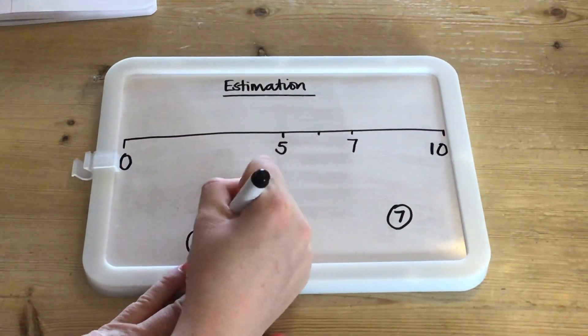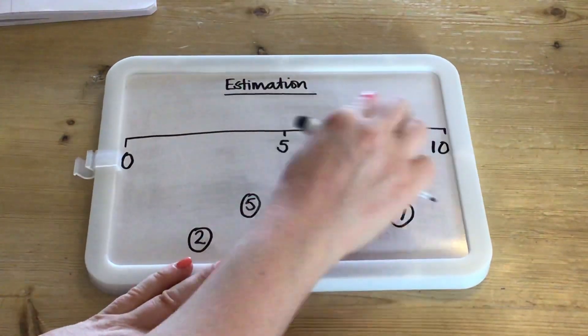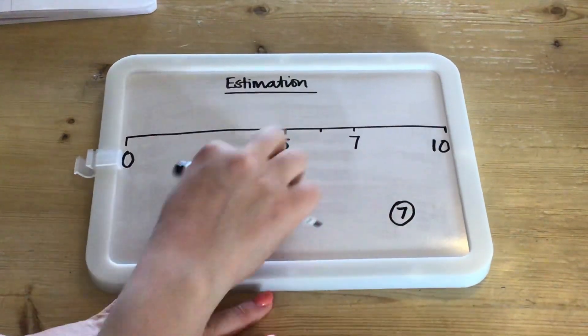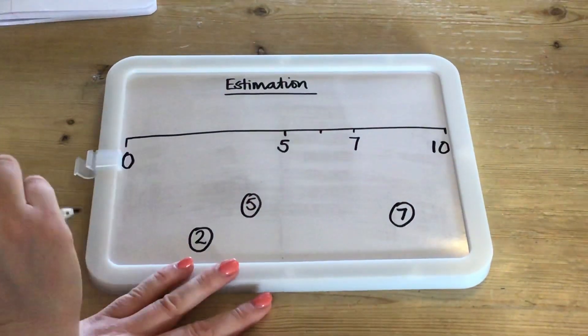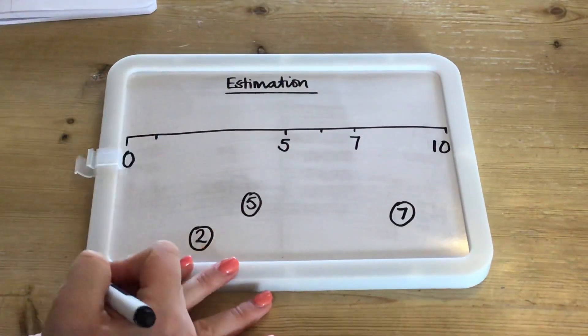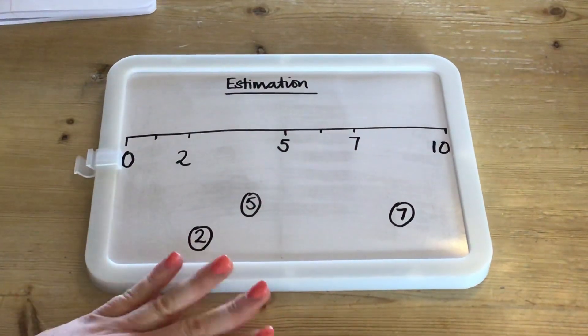Now thinking about where 2 might go on our number line, we know that 2 won't belong over here because 2 is less than 5 so it's going to come over in this side of the number line. We know that 1 will come around here so 2 should be around there.